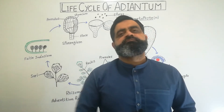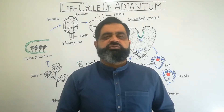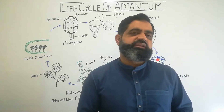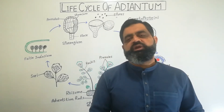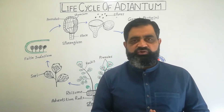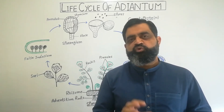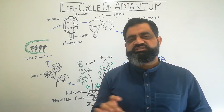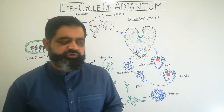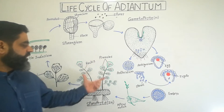Hello to all students. Today we are going to discuss the structure and life cycle of Adiantum, which is also known as maidenhair fern. Adiantum has different species and it usually grows on moist surfaces near water channels like rivers, canals, streams, and lakes, usually in hilly and cold areas. This plant is known as the sporophyte.